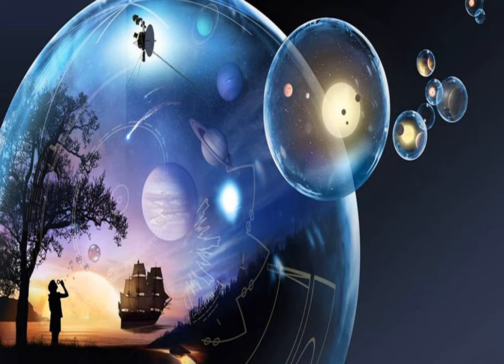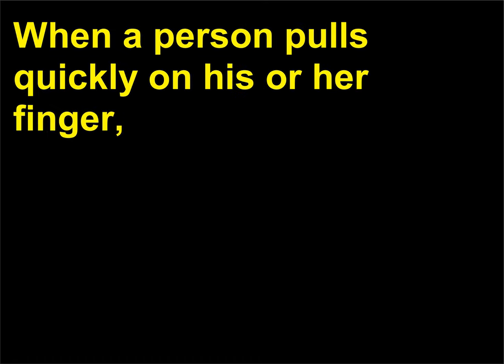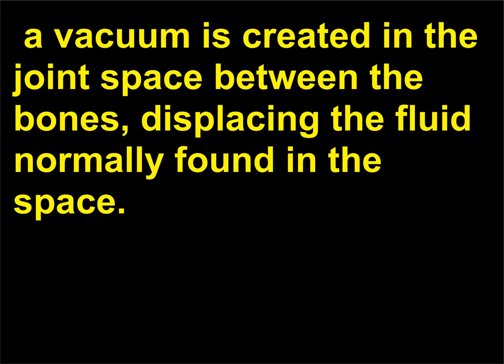What makes knuckles crack? When a person pulls quickly on his or her finger, a vacuum is created in the joint space between the bones, displacing the fluid normally found in the space. The popping sound occurs when the fluids rush back into the empty gap.